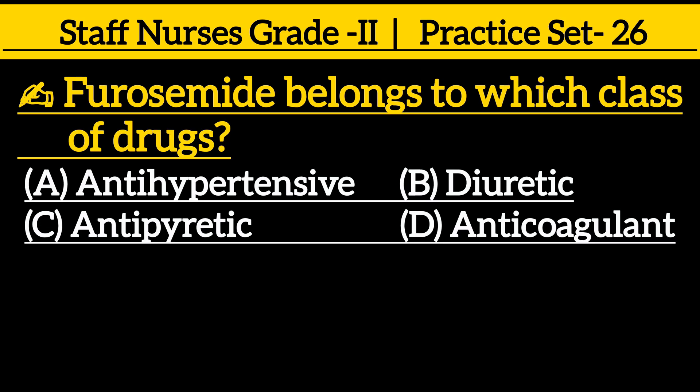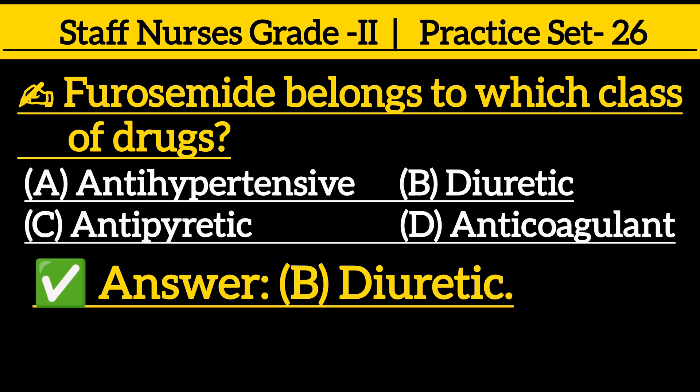Next question: furosemide belongs to which class of drugs? Option A: anti-hypertensive, option B: diuretic, option C: antipyretic, option D: anticoagulant. The correct answer is option B: diuretic.